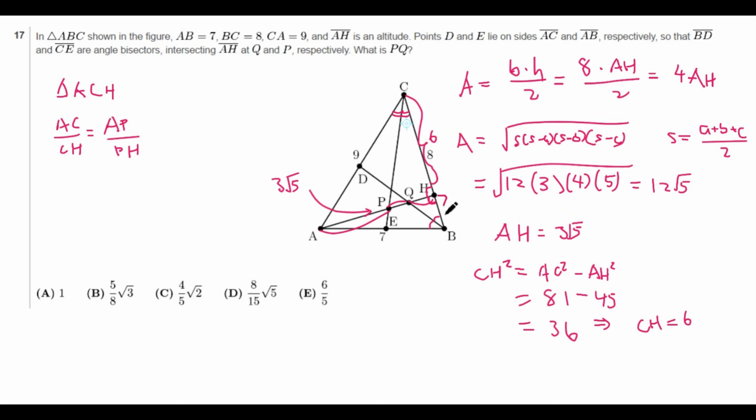So let's label this as 6. And now, of course, we know that BH is equal to 2 because 8 minus 6 is 2. So now we know CH and AC, we can calculate this ratio to be 9 to 6, which is equal to 3 halves. So now we get that AP over PH is 3 halves.